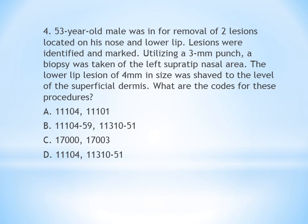The fourth question: A 53-year-old male came in for removal of two lesions on his nose and lower lip. Utilizing a 3 mm punch, a biopsy was taken of the left supratip nasal area. The lower lip lesion, 4 mm in size, was shaved to the level of the superficial dermis. Two different procedures are performed on two different sites — a punch biopsy and a shaving. If you are familiar with modifiers, you can immediately eliminate options without modifiers.